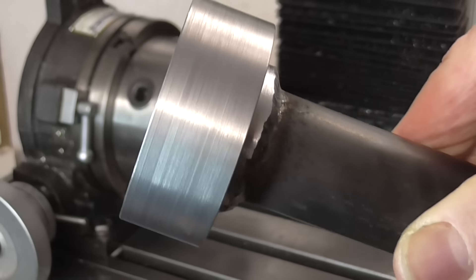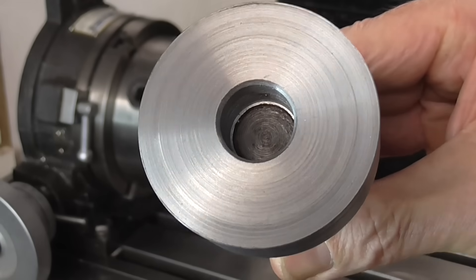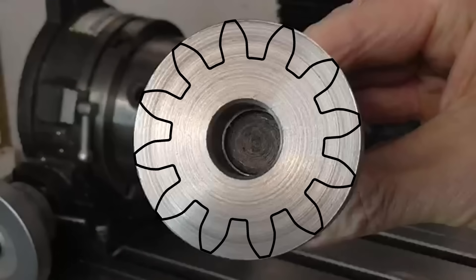This is the blank I prepared for a 12 tooth 4 mod gear. It's 56mm in diameter.